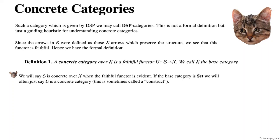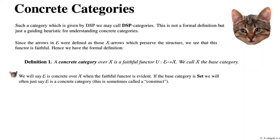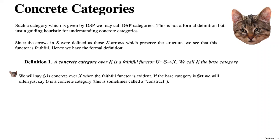We say that a concrete category over x is a faithful functor U: E → x, and we call x the base category. We will say that E is concrete over x when the faithful functor is evident, so we often just omit U. If the base category is Set, we will often just say that E is a concrete category, and this is sometimes just called a construct when it is a concrete category over Set.